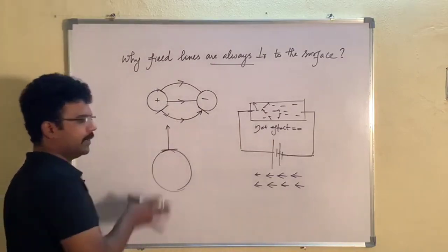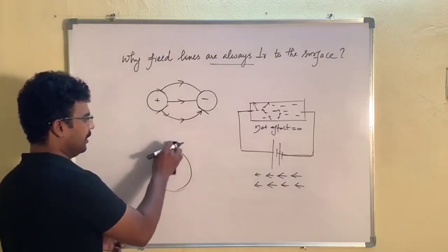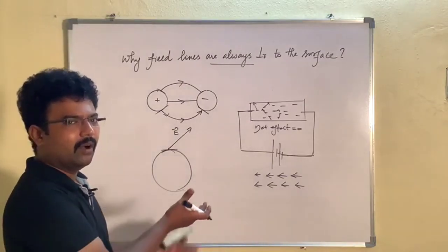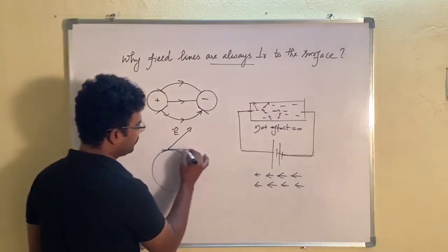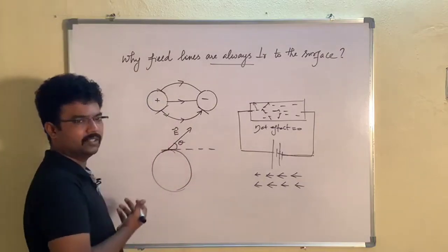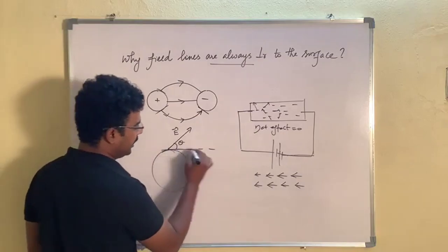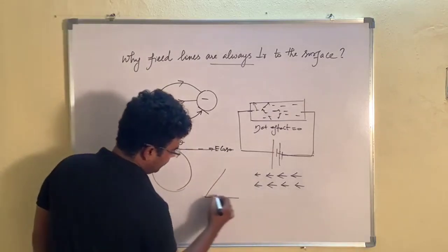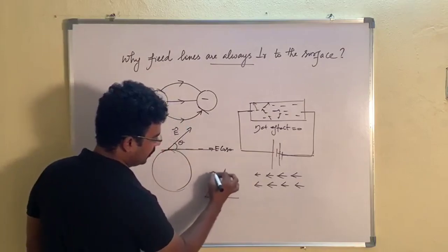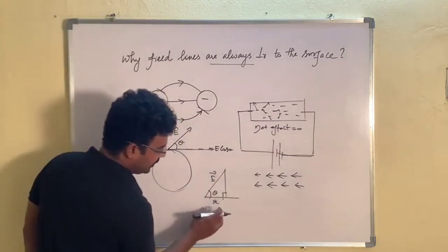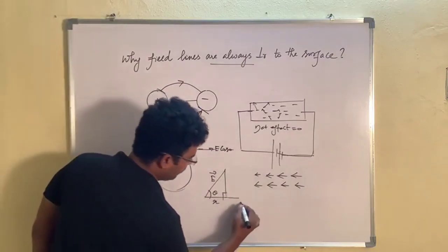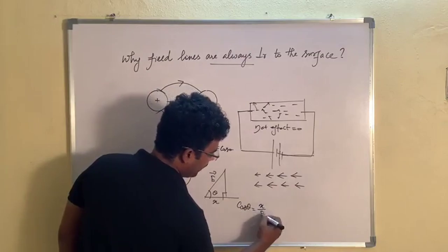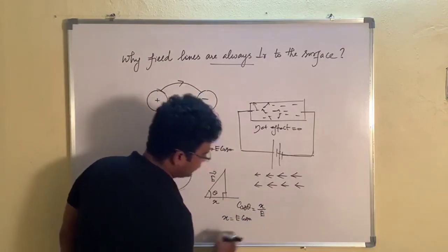This is electric field lines. What do we do with respect to horizontal? With respect to horizontal, theta. What is this component? E cos theta. Let me explain. This is theta, 90 degrees. If you assume the hypotenuse is E and I ask you to calculate x, you use cos theta. So we can write x equals E cos theta.